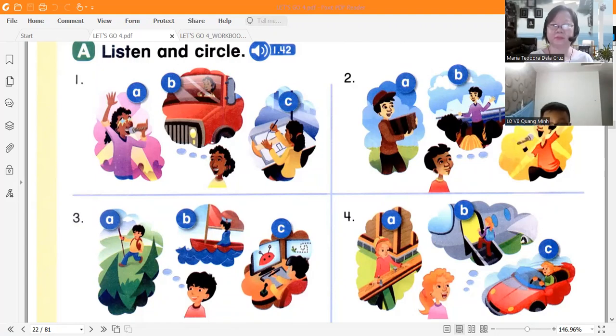Number one: she wants to be a singer. Okay, what does she want to be? He wants to be a singer. Oh, that's letter C. Good. Number two, he wants to be a tour guide. What does he want to be?